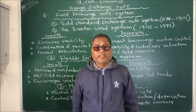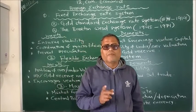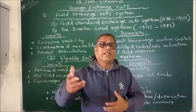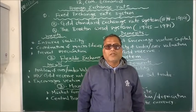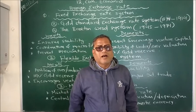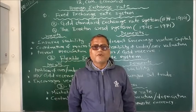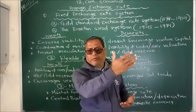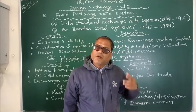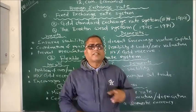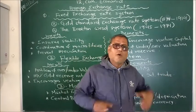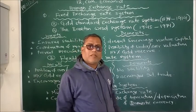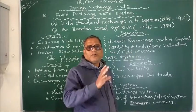Under the gold standard exchange rate system, the value of a currency of a country is determined in terms of the value of gold. For example, suppose with 1 US dollar we can purchase 10 grams of gold, and with 1 rupee we can purchase only 1 gram of gold. So naturally, the exchange rate is determined in terms of the value of gold. Gold was chosen because it is a rare and precious metal, and its value hardly fluctuates over time — it remains almost stable. That's why gold was chosen to standardize the exchange rate system.